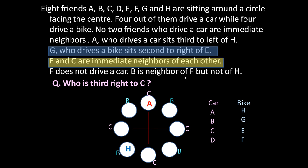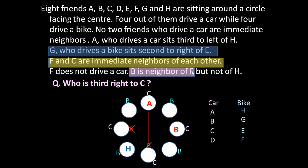B is neighbor of F but not of H. H is placed here, so B cannot occupy the positions immediately adjacent to H. We also know B drives a car, so B cannot sit in a bike position. With these constraints, only one car position is left for B, and B is placed there. B is a neighbor of F.